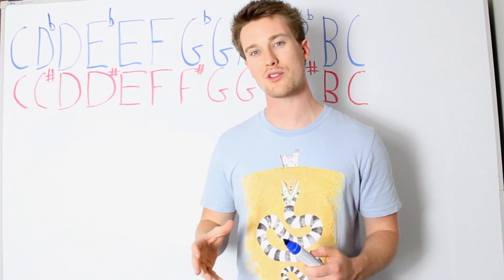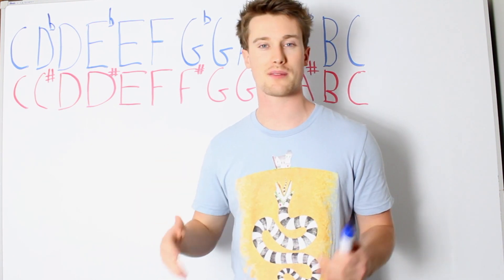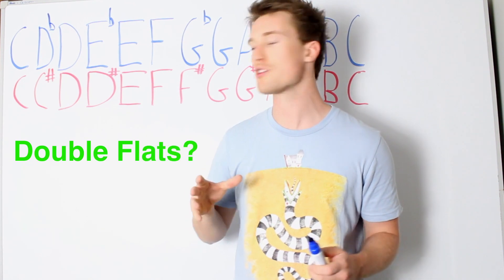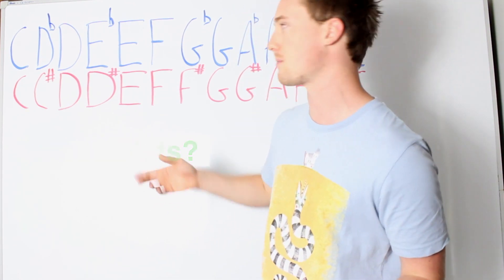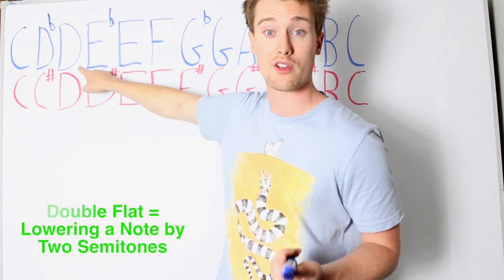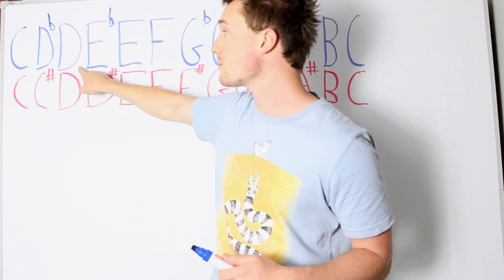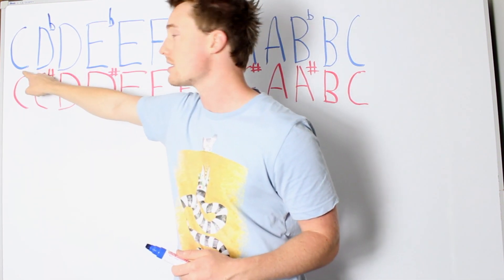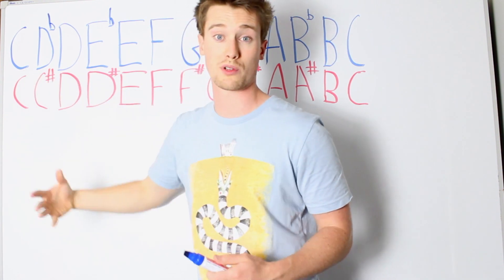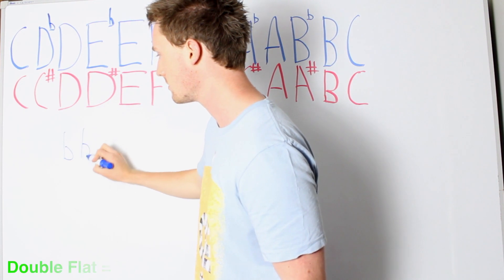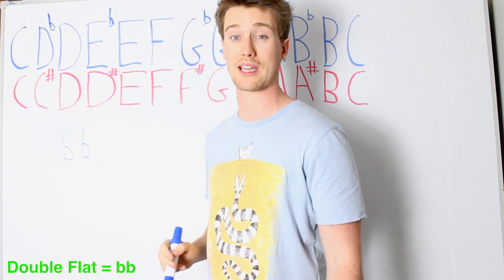In sheet music you'll also come across double flats and double sharps. A double flat means you take a note — let's use D — and move back two semitones, or a whole tone. So one flat gives you D flat, but a double flat symbol takes you to C, a tone below. A double flat looks like two lowercase B's together.